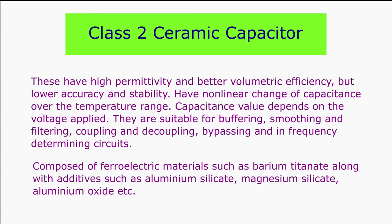Class 2 ceramic capacitors have high permittivity and therefore better volumetric efficiency than class 1 ceramic capacitors, but they have lower accuracy and stability. The ceramic dielectric is characterized by a non-linear change of capacitance, and the capacitance value depends on the applied voltage and temperature range. They are suitable for applications that require the capacitor to maintain only a minimum value of capacitance, such as buffering, smoothing and filtering in power supplies, inter-stage coupling and decoupling of electric signals, and bypassing frequency-discriminating circuits. Class 2 ceramic capacitors are made up of ferroelectric materials such as barium titanate and additives such as aluminum silicate, magnesium silicate, aluminum oxide, etc. These ceramics have high to very high permittivity in the range of 200 to 14,000, depending on the field strength.